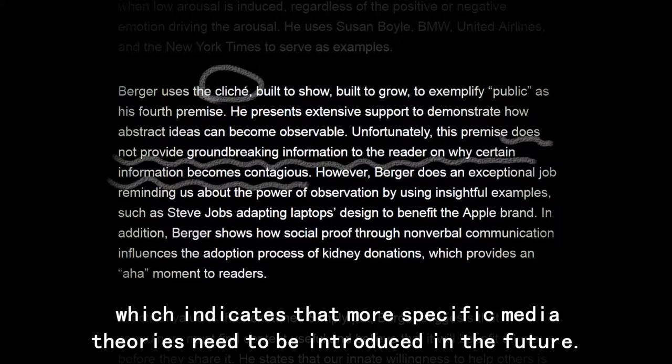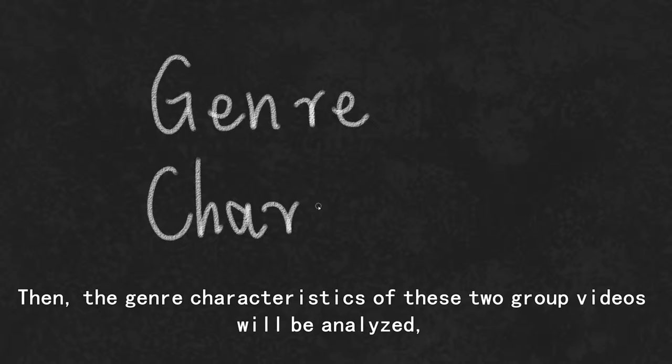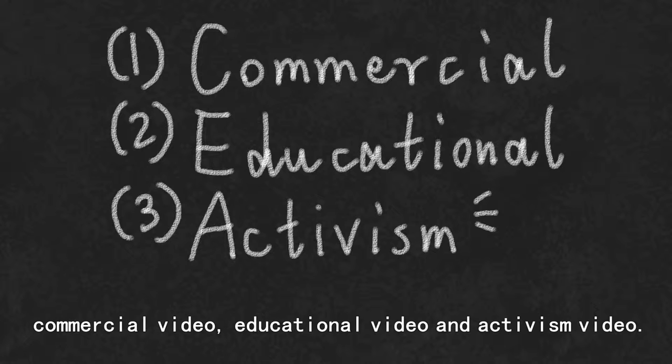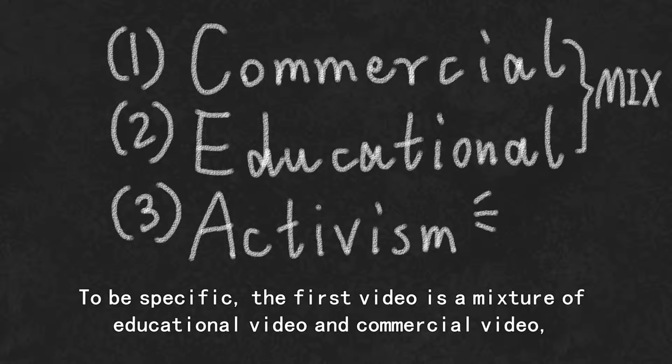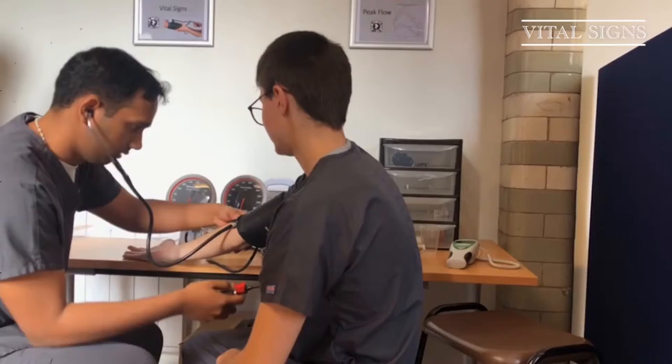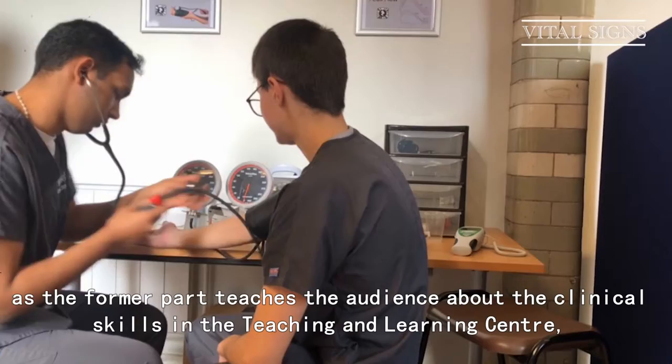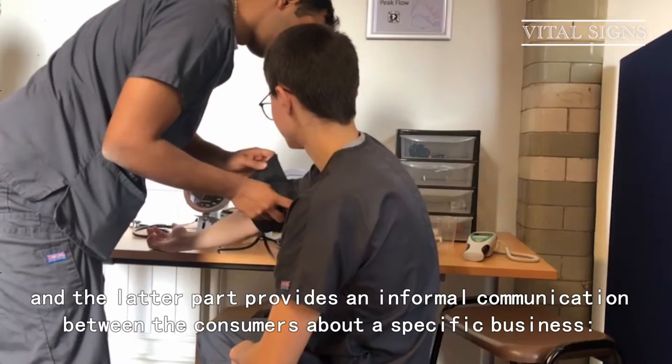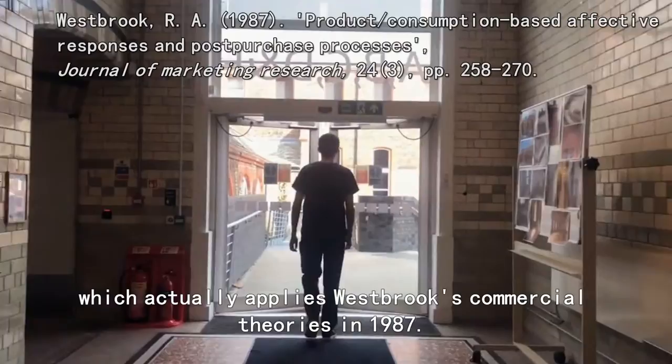The general characteristics of these two group videos will be analyzed, including three main genres: commercial video, educational video, and activism video. To be specific, the first video is a mixture of educational video and commercial video, as the formal part teaches the audience about clinical skills in the teaching and learning center, and the latter part provides informal communication between consumers about a specific business — university admissions — which applies Westbrook's commercial series in 1987.